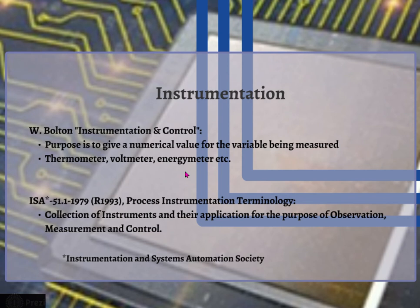Likewise, a weighing machine gives the rating of weight in kilograms. Then we have the ISA standard — the Instrumentation and System Automation Society standard 51.1, from 1979 and revised in 1993 — which defines process instrumentation terminology as the collection of instruments and their application for the purpose of observation, measurement, and control.